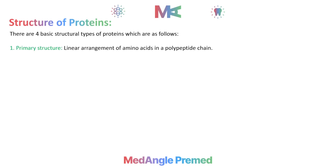The first is primary structure. If amino acids are linearly arranged in a protein, that means they are arranged in a straight arrangement, then they have primary structure.